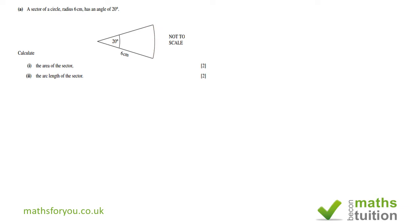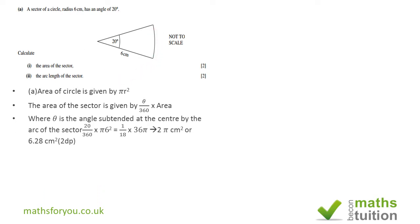Now the area of the sector is very much dependent on the angle subtended at the center by the arc. In this case, the angle is 20 degrees. The area of the sector is the angle divided by 360 times the area of the whole circle, πr². So we end up with (20/360) × π × 6², where 6 is the radius of the sector.